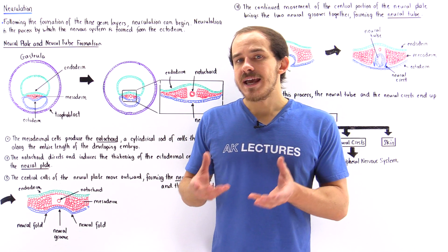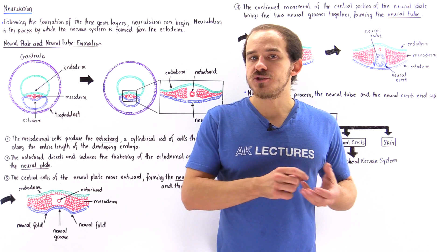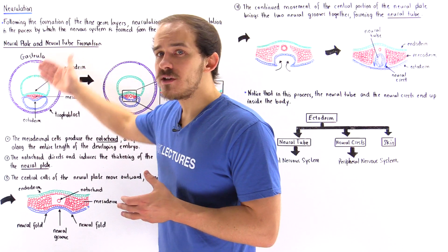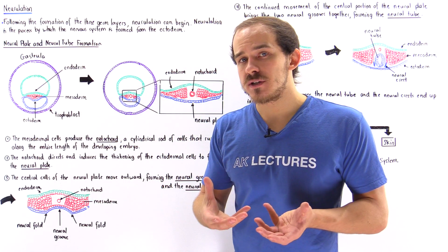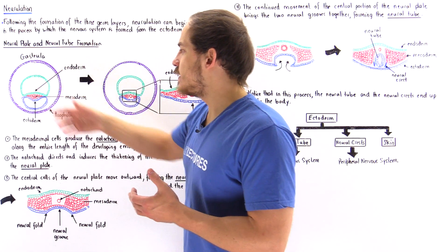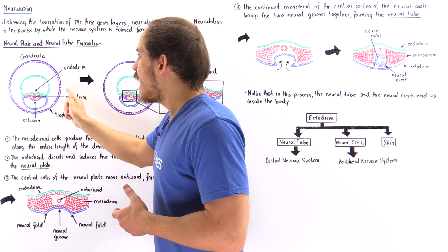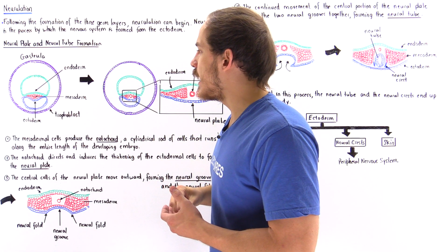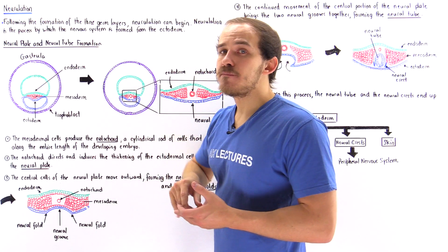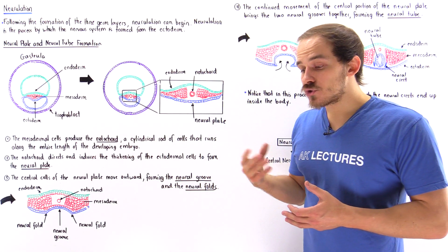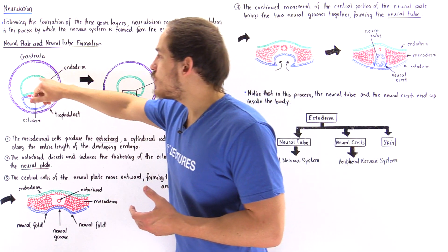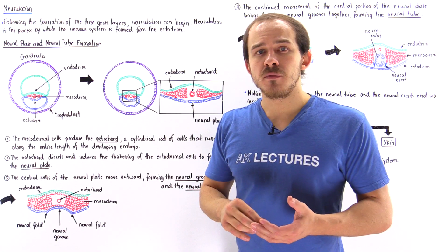Neurulation takes place as soon as gastrulation takes place. Let's begin by supposing we have a cross section of the gastrula stage of embryological development, shown in the following diagram. Taking a cross section, we see the following different types of cells. The purple cells are the cells that make up the trophoblast, and the trophoblast eventually forms the chorion as well as the placenta.